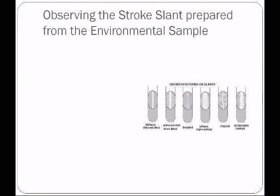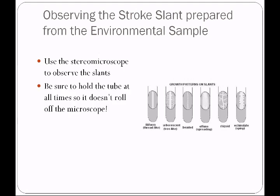Then you're going to use the microscope to observe the stroke slant. Lay the stroke slant on the base of the microscope and focus up and down with the focus knob — make sure you hold the tube at all times so it doesn't roll off. Some patterns you are likely to see: a straight line is called filiform. I like to think of it as a nail file — nail files are straight on the sides and make a smoothness, so that helps me remember filiform like nail file.